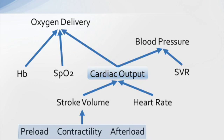Cardiac output is just one of the components necessary to achieve oxygen delivery. We also need adequate systemic vascular resistance (SVR) to maintain a blood pressure that will push oxygen molecules out to the periphery and maintain adequate perfusion pressure in the organs. At the same time, we need an adequate hemoglobin level to carry the oxygen and to attach that oxygen to the hemoglobin.